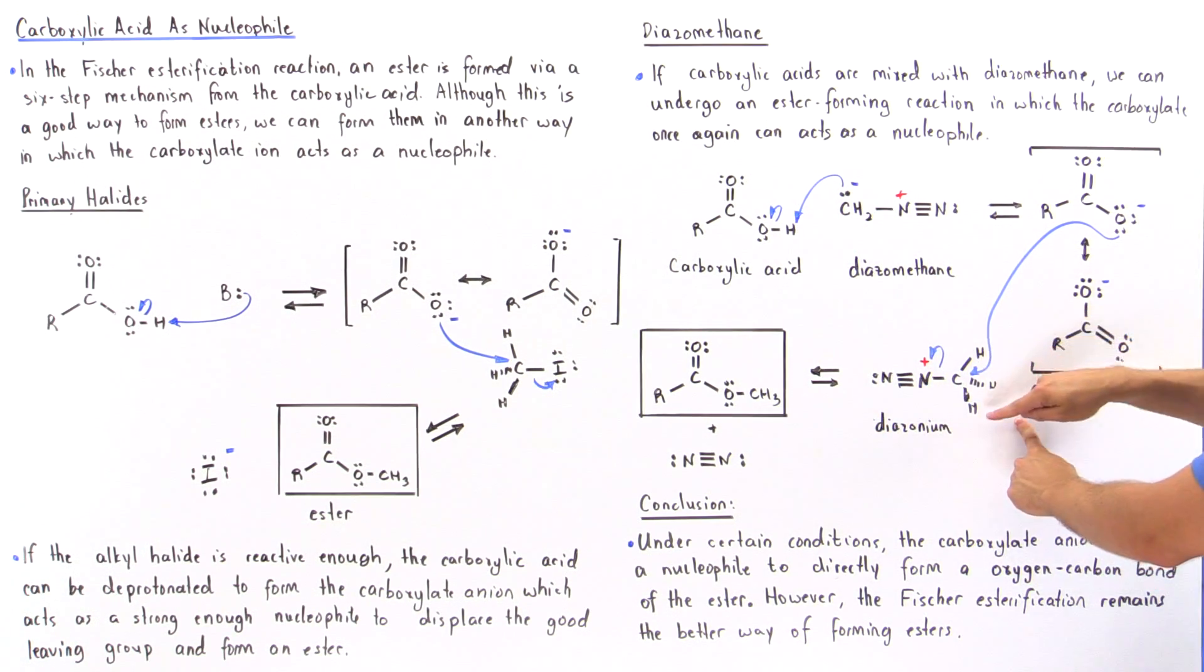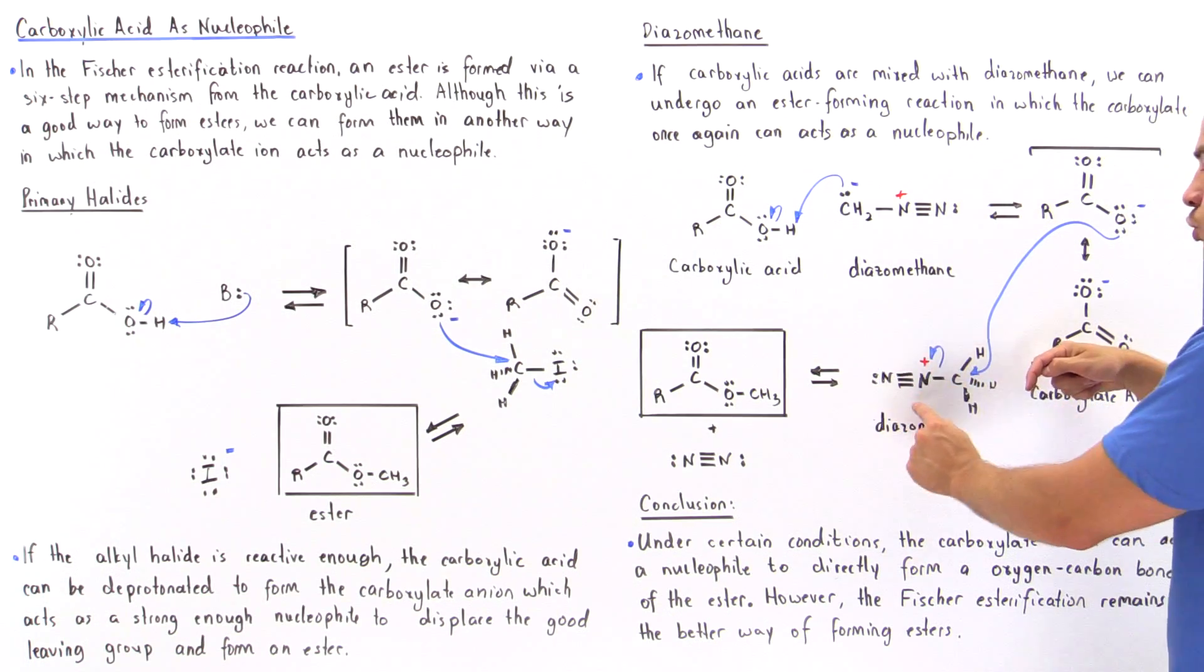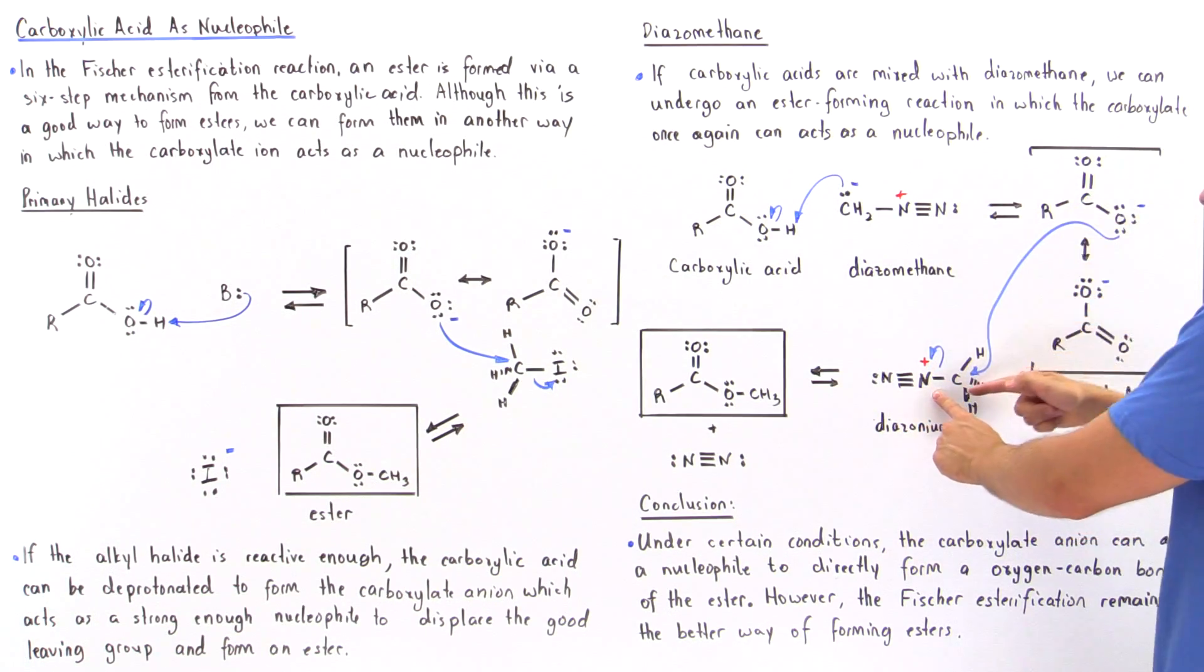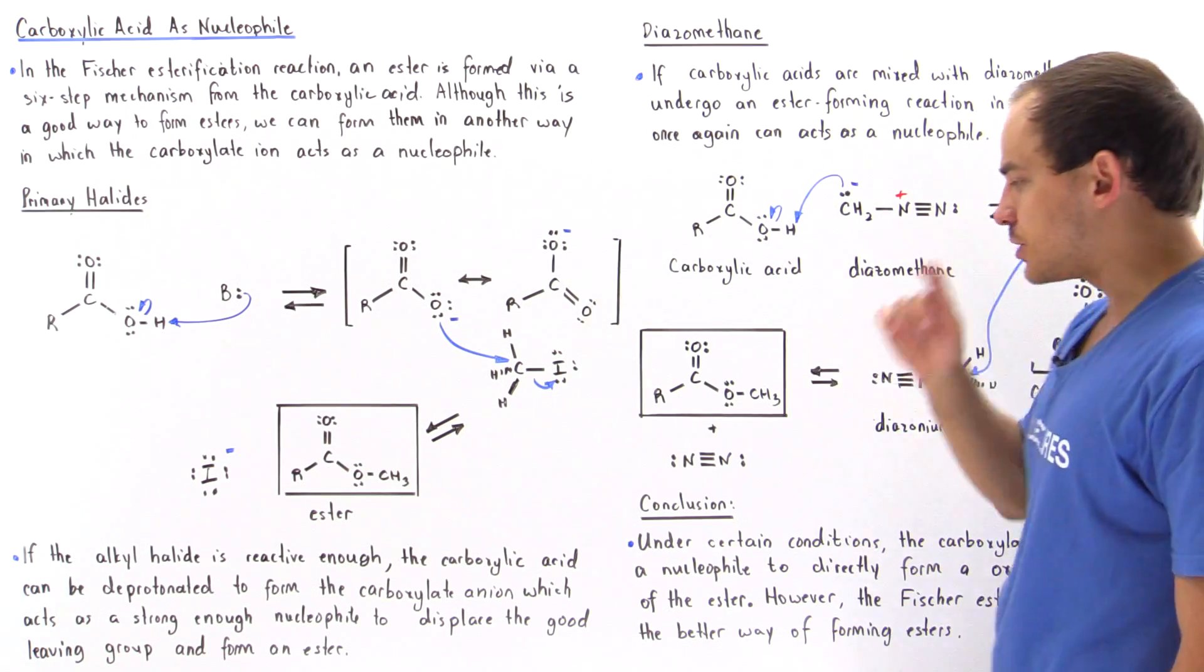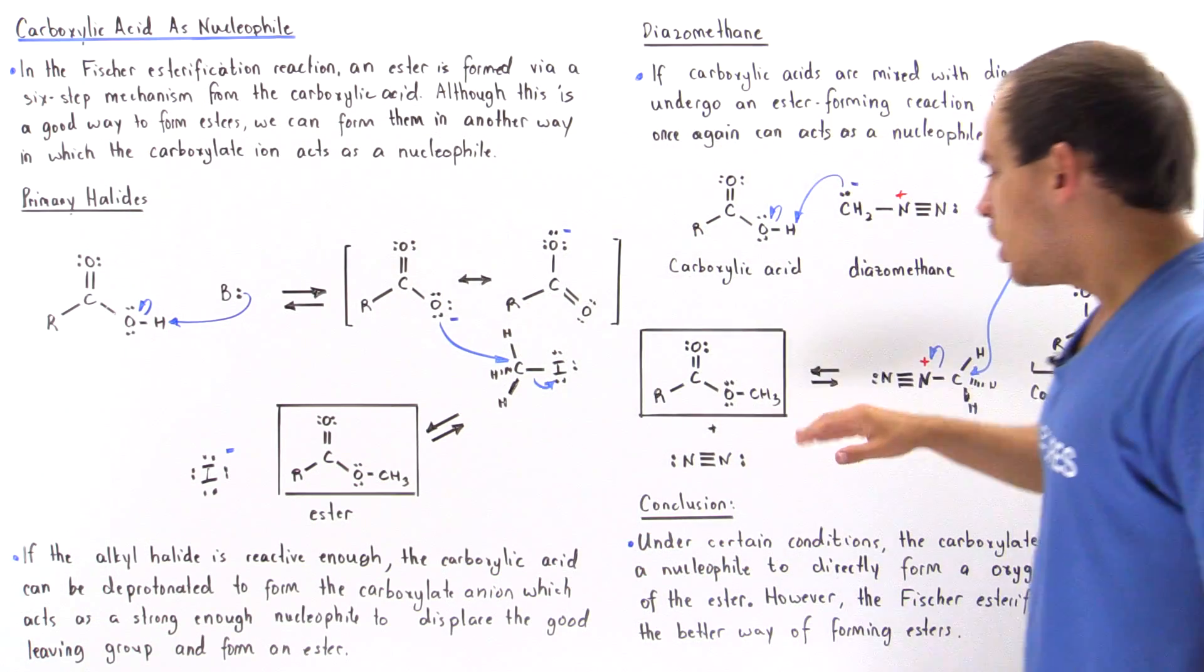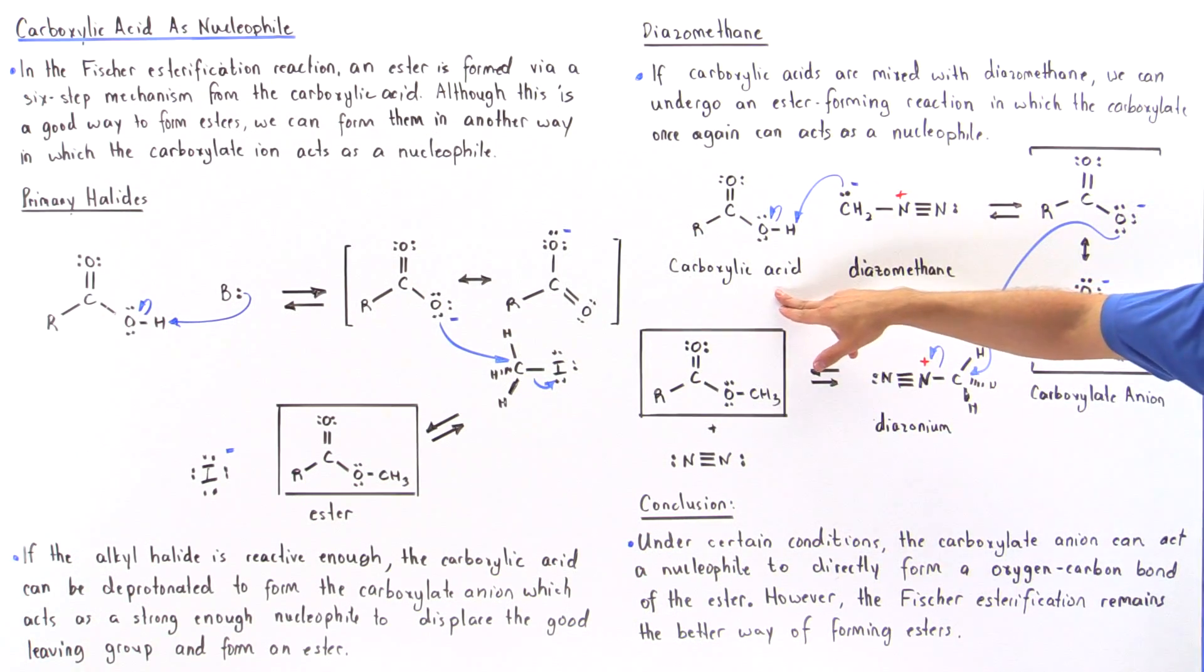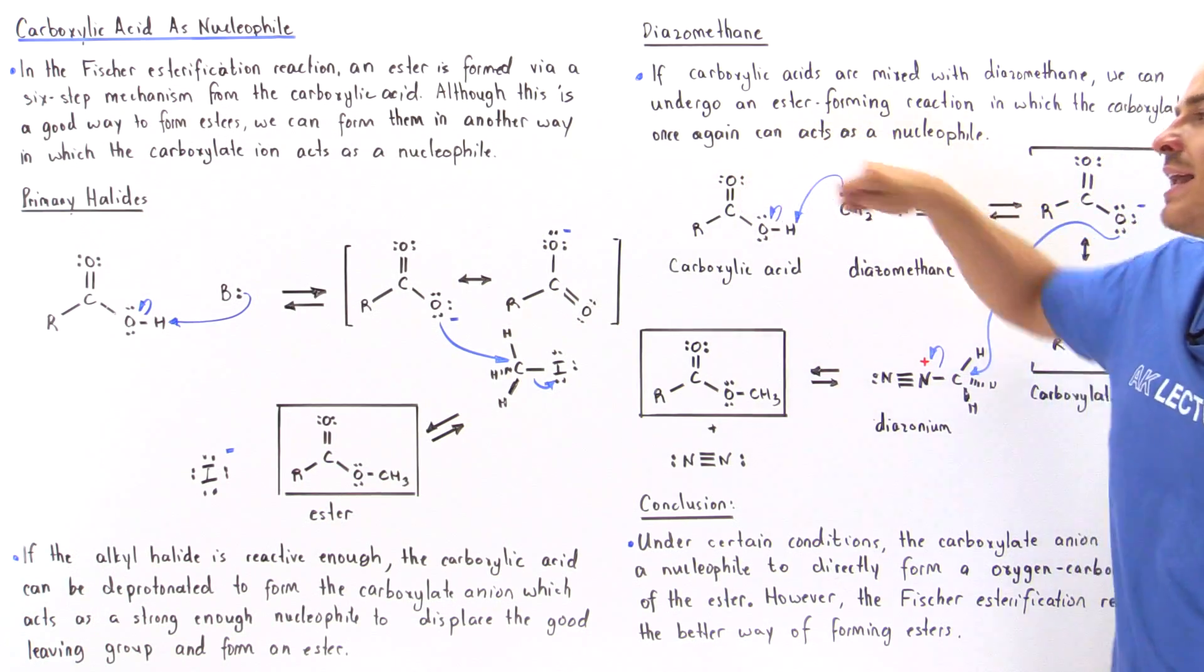Which contains enough space because we only have H atoms and a good leaving group. So this displaces the N2 group and attacks this carbon from the rear side via an SN2 reaction. And so just as we form our ester compound here, we also form the ester compound here from our carboxylic acid without actually breaking the bond between carbon and oxygen.